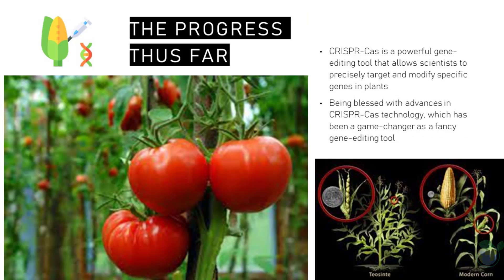Taken together, plant biotechnology has seen significant advances in the last 10 years, with researchers developing new tools and techniques that have the potential to improve crop resistance, tolerance to environmental stress, nutritional value, and yield. These advances have the potential to address some of the most pressing challenges facing agriculture, such as food security and climate change. However, it is also important to consider the potential ethical, social, and environmental implications of these technologies, and to ensure proper regulation, research, and monitoring.